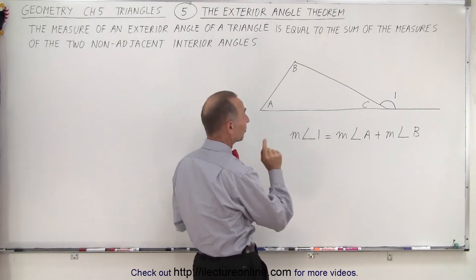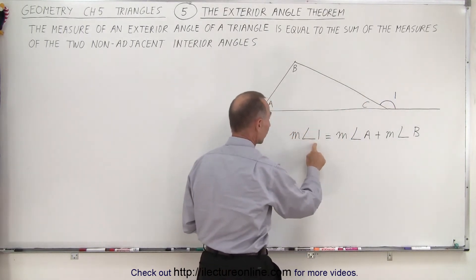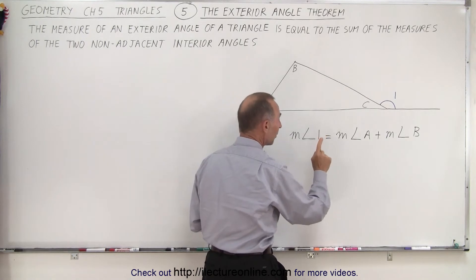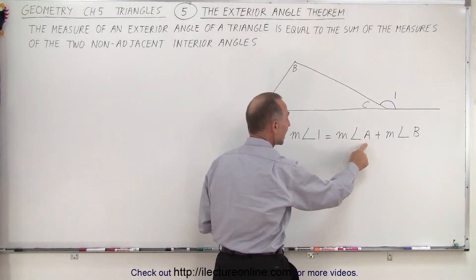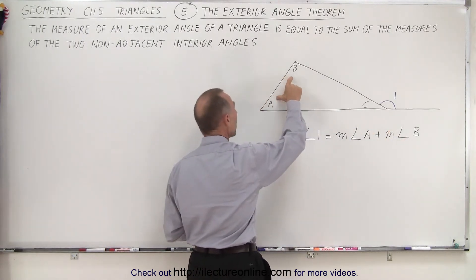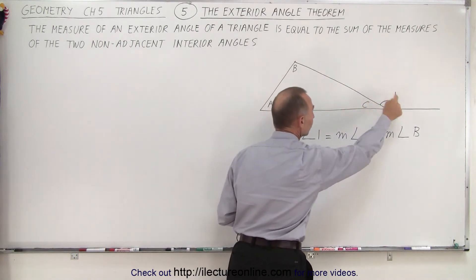What this theorem says is that the measure of that exterior angle, the measure of angle 1, is equal to the sum of the measures of angles A and B, which are the two non-adjacent angles to the exterior angle.